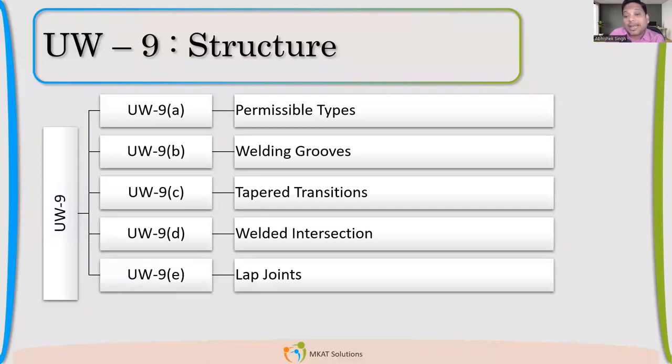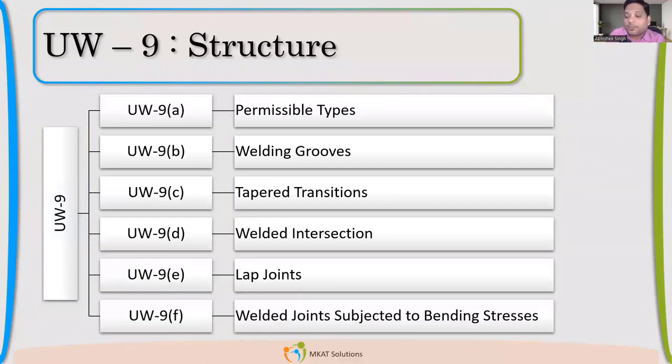9E talks about lap joints. F talks about the closing plate, flat head welded with a shell. Tube sheet welded with a shell. How to make that joint?